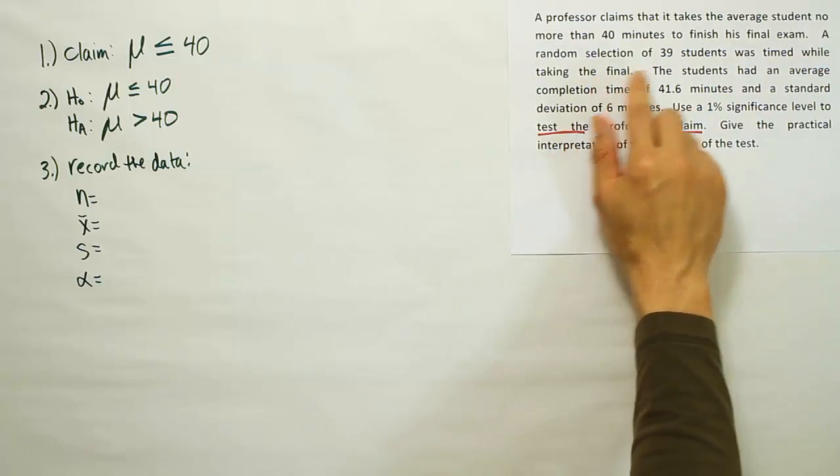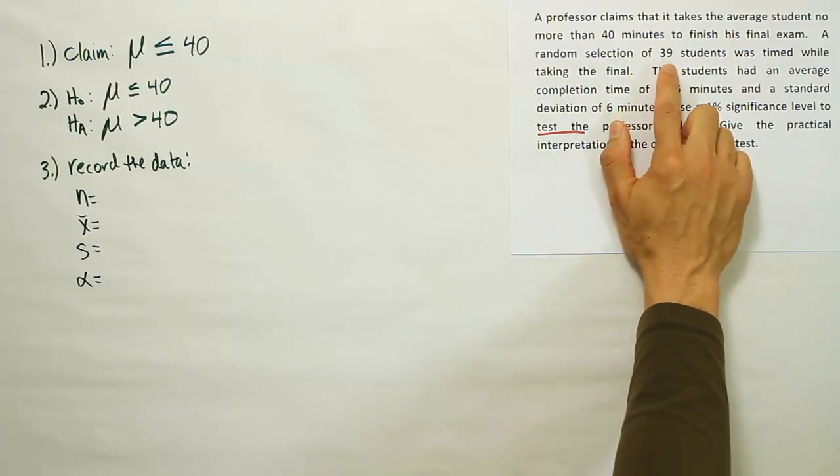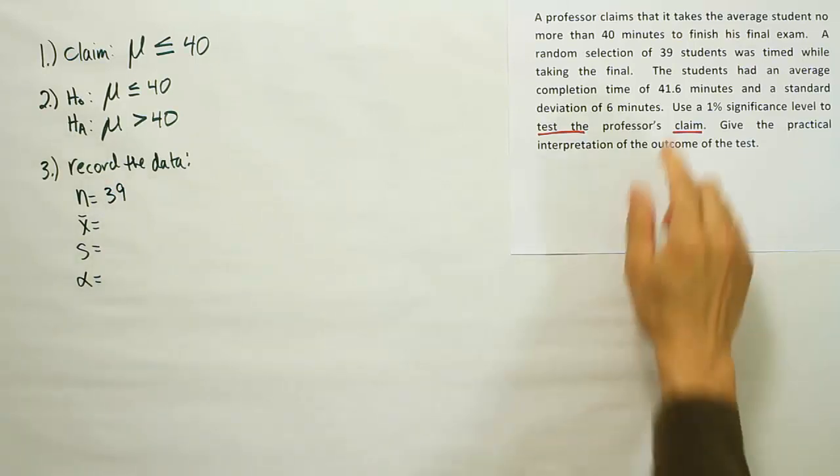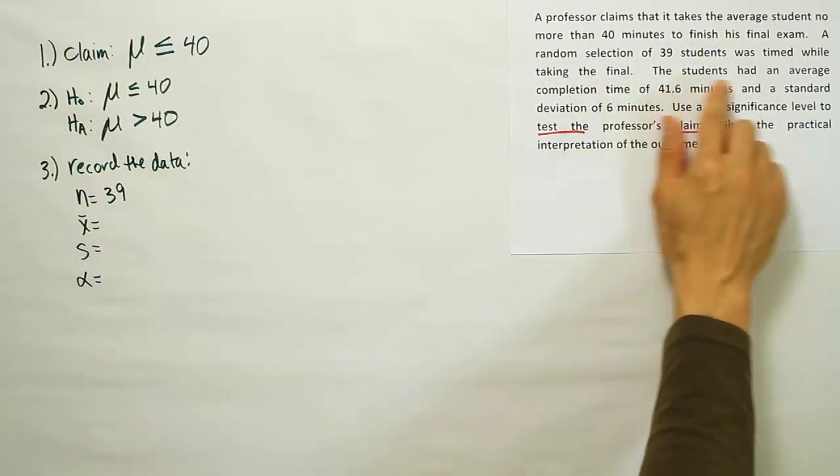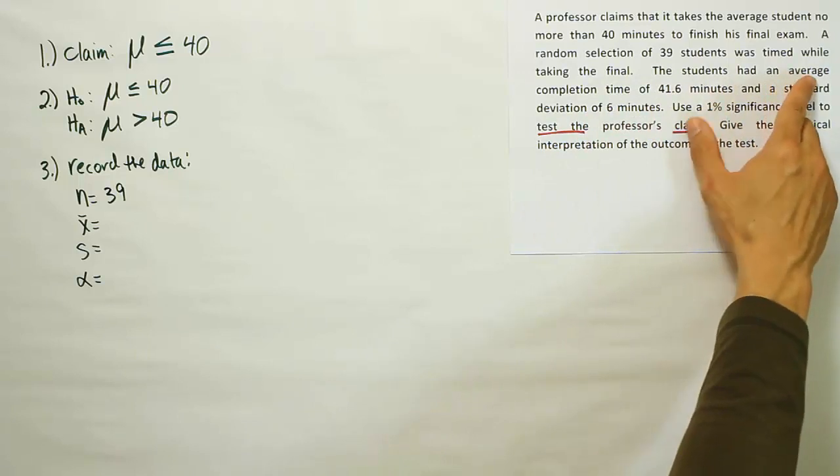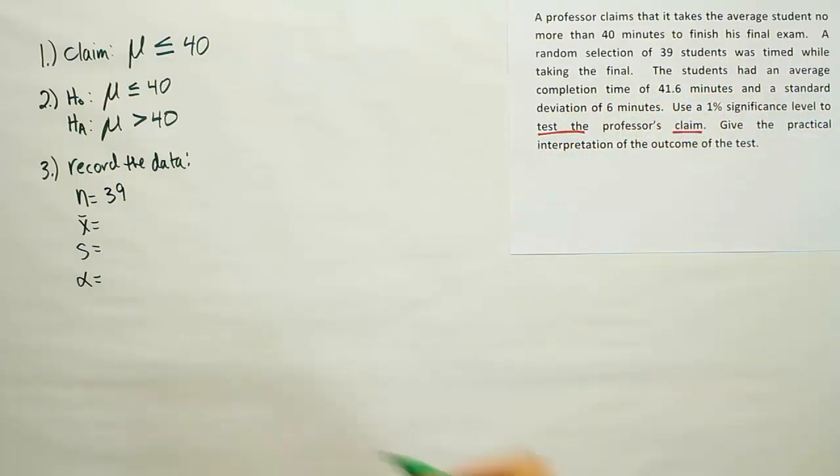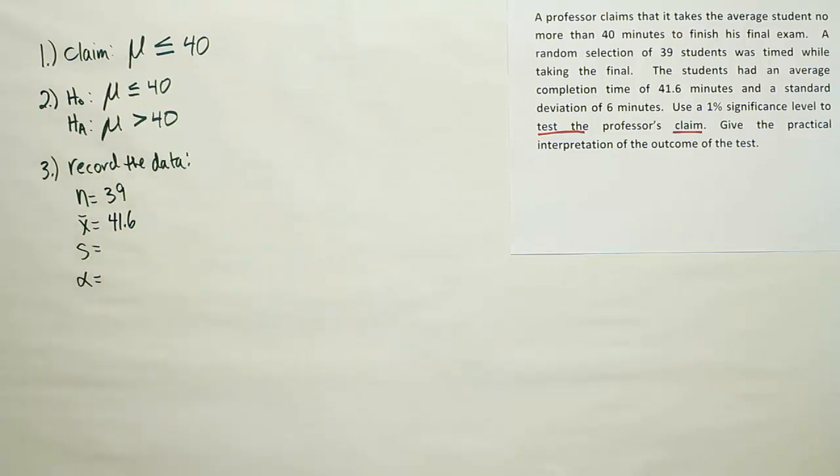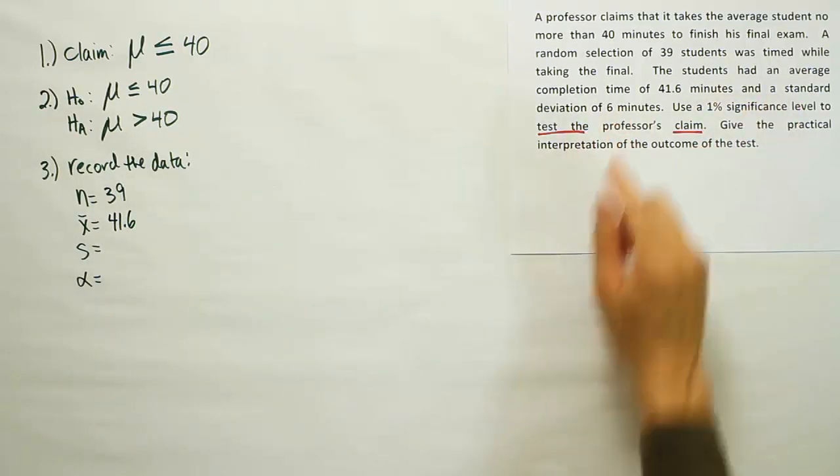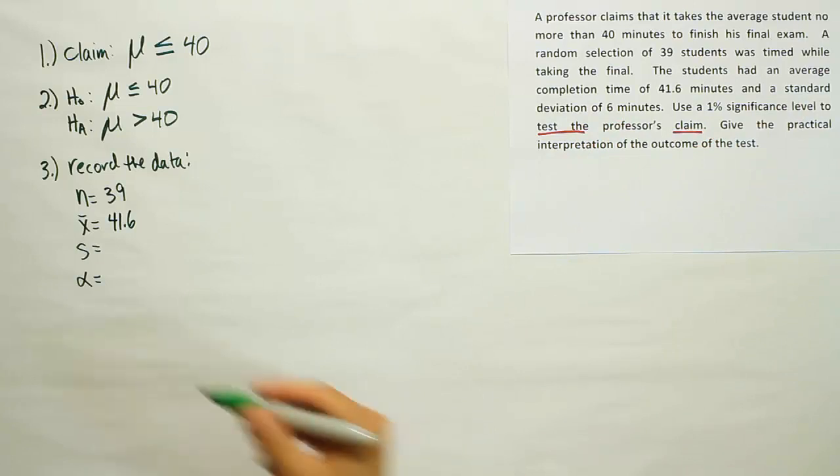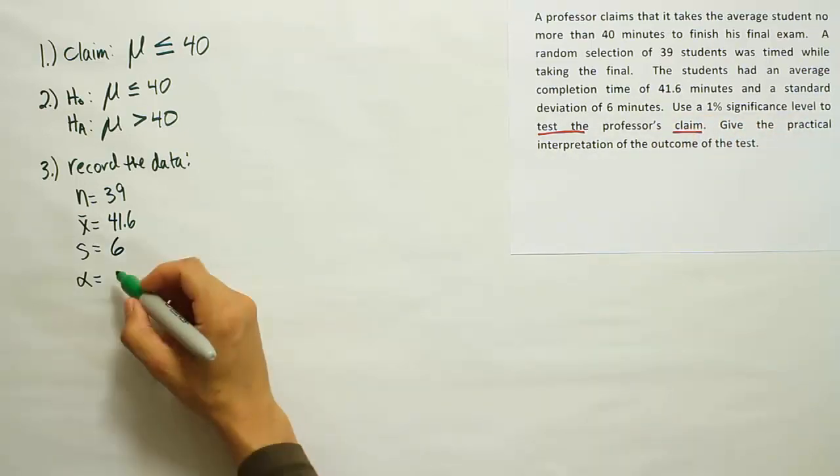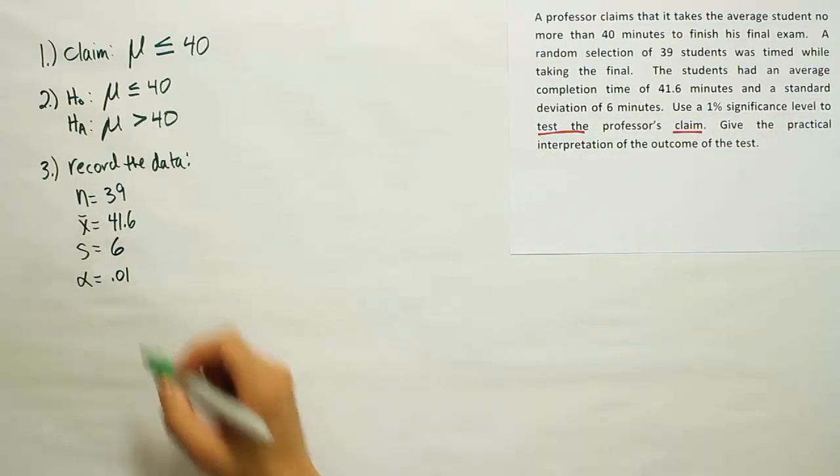So let's try to get the N for this particular problem. It says a random selection of 39 students, right? 39 students then becomes our N, so N is 39. They were timed while taking the final, the students had an average. That means the X bar, right? Completion time was 41.6 minutes. And a standard deviation of 6 minutes. This means that S is 6 minutes, or 6. And then finally, it says use a 1% significance level. Remember, alpha is the significance level, so that's 0.01.